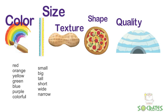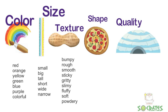For the texture of an object, you could describe it as bumpy, rough, smooth, sticky, gritty, slimy, fluffy, soft, or powdery.